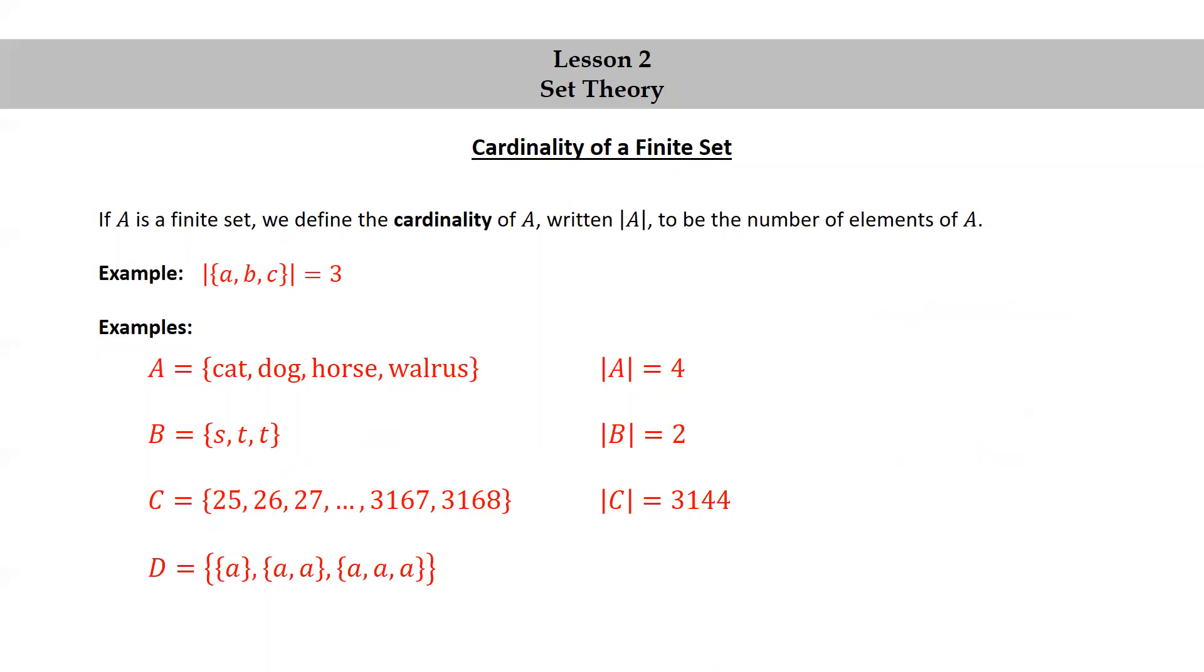Let D be the set consisting of {{a}, {a, a}, {a, a, a}}. Then what's the cardinality of D? Well, it's one. How do we get that?